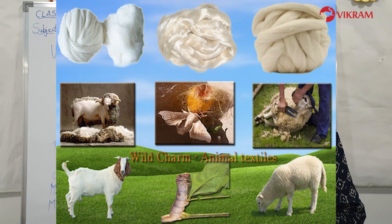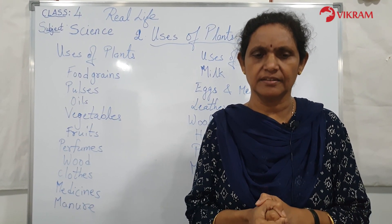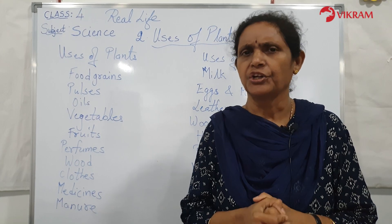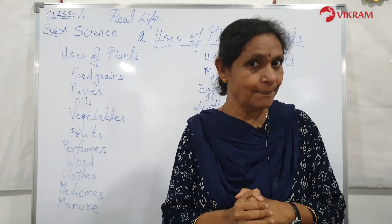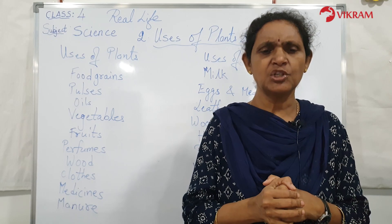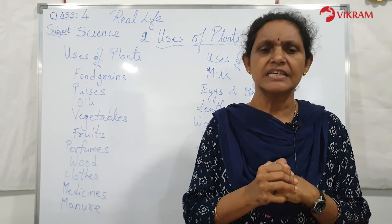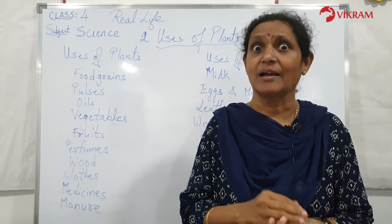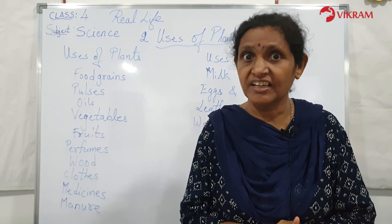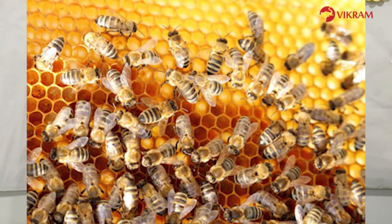Wool is made from the fur of sheep, yak, etc. It is used in making woolen clothes and caps, which we wear during the winter season. Next is silk — silkworms produce silk fibers which are made into silk clothes; silk is very smooth and soft.